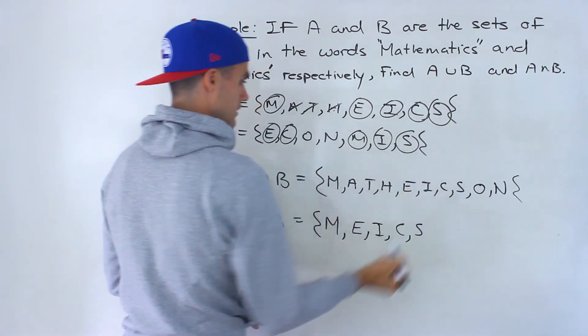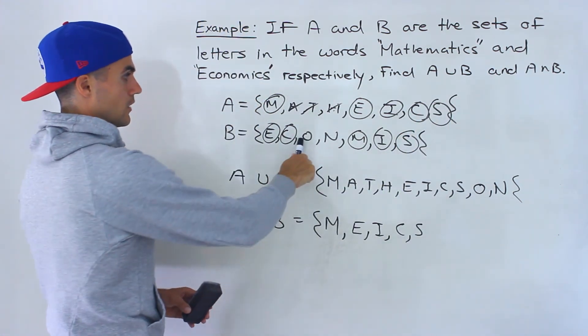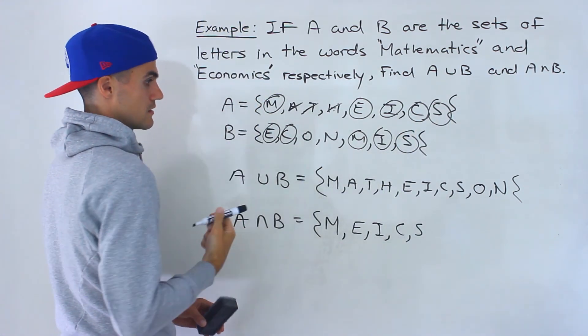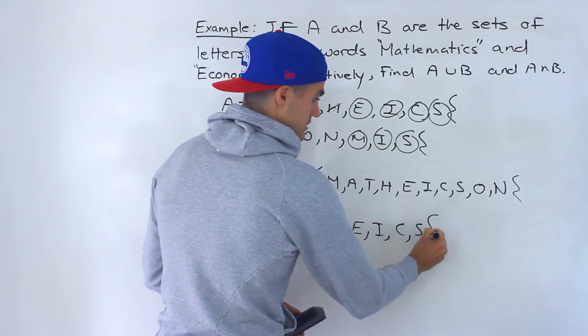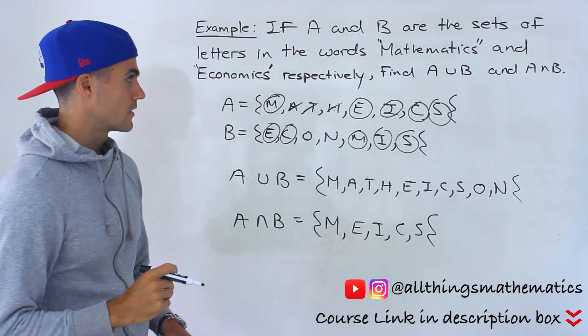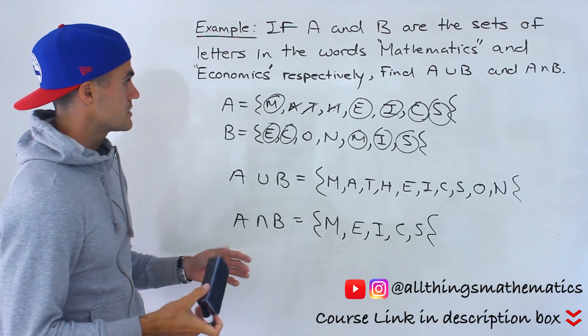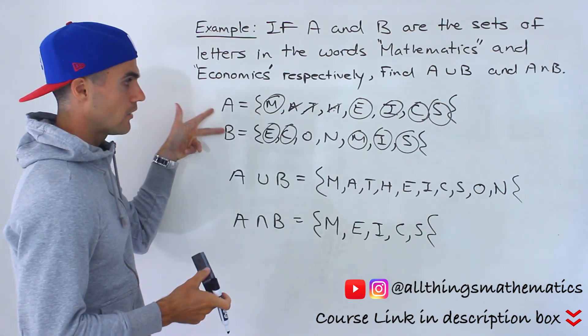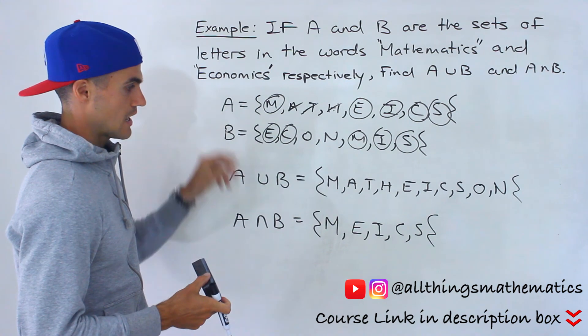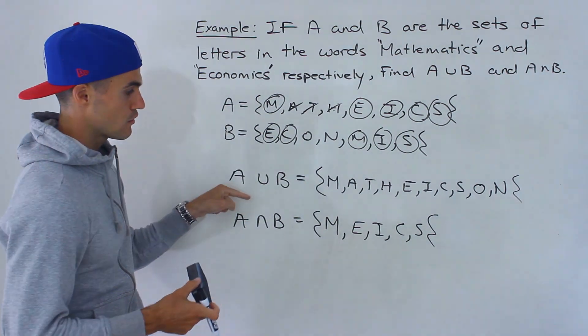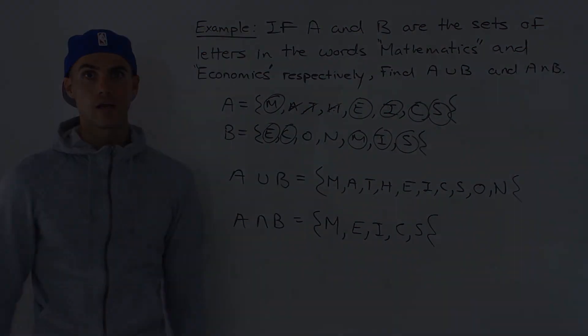And then O and N is just in B, it's not in A, and so this here would be the intersection. So if you get a question like this I recommend maybe writing out the sets individually first and then go into finding the union and intersection.